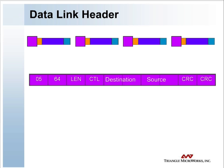Each frame has a 16-bit source address and a 16-bit destination address, which may be a broadcast address. The address information, along with a 16-bit start code, the frame length, and a data link control byte, is contained in the 10-byte data link header.